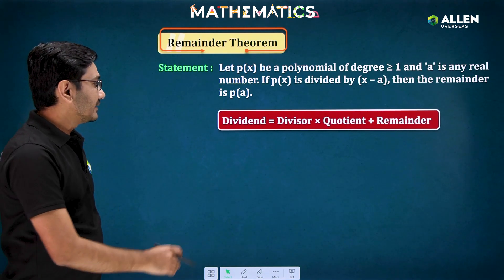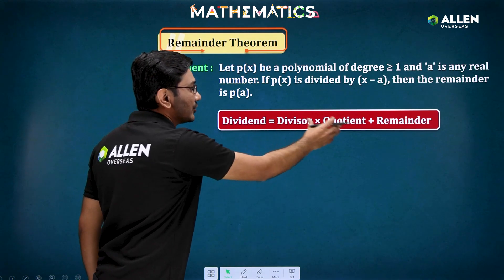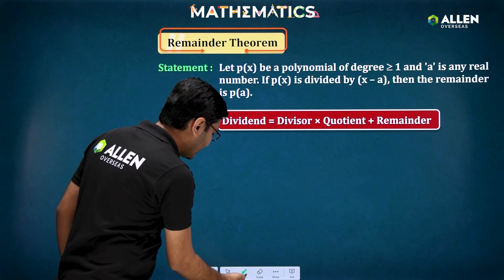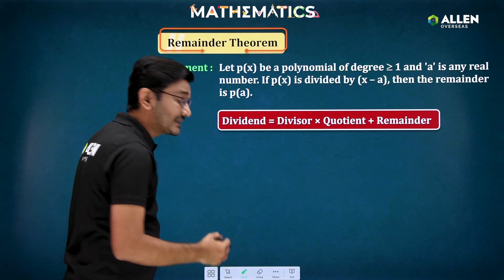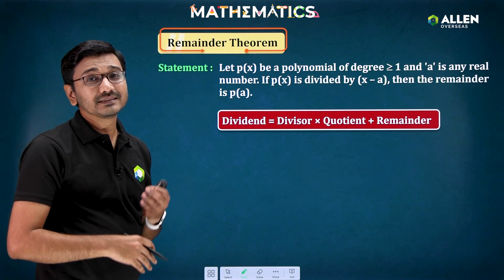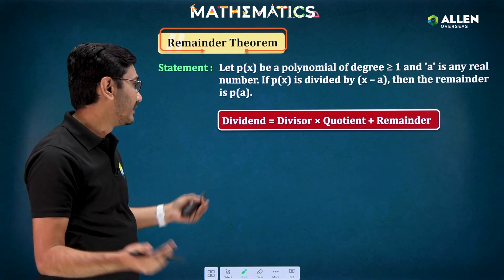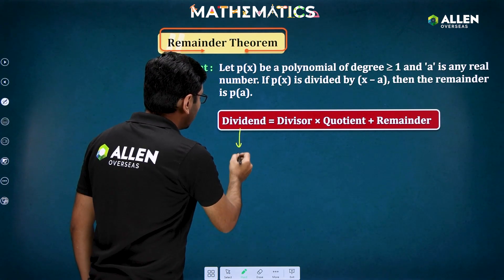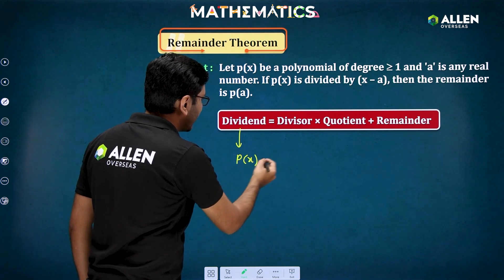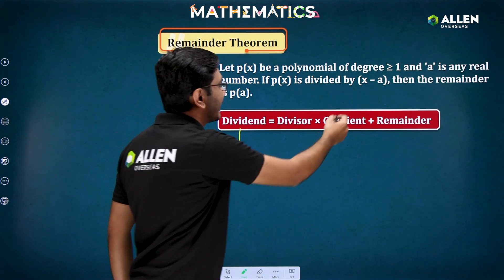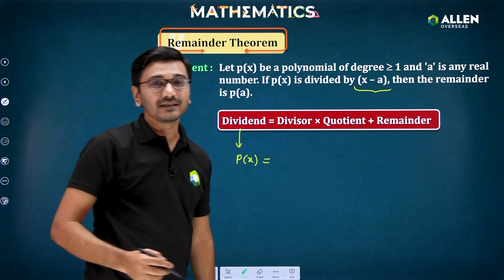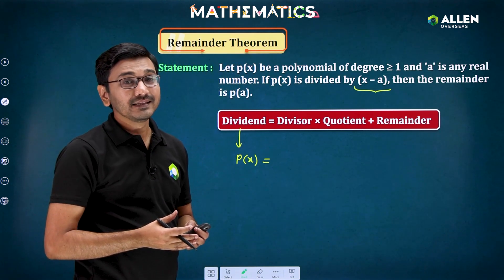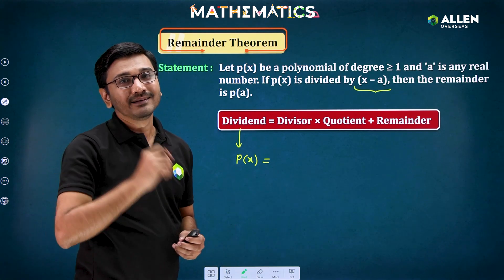We know that whenever we divide something, we get a divisor, quotient, and remainder — this basic concept we already know. So suppose if you are dividing a polynomial p(x) of any degree — suppose it is of degree 5, 6, or 7 — by a factor (x minus a), which is a linear factor. Whenever you divide a polynomial by a linear factor, the remainder you get will be a constant.